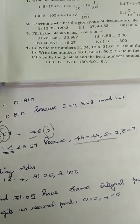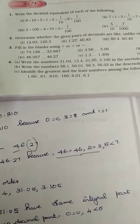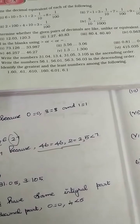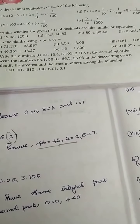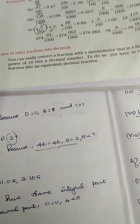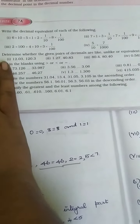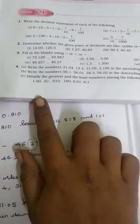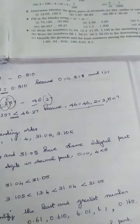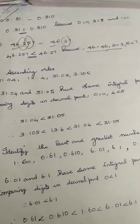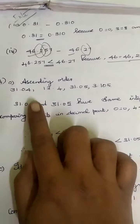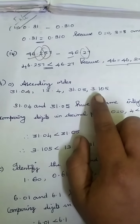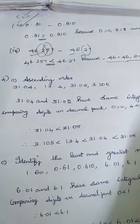Problem number 4: write the numbers 31.04, 13.4, 31.05, and 3.105 in ascending order. Ascending order means writing the numbers from the smallest to the greatest.